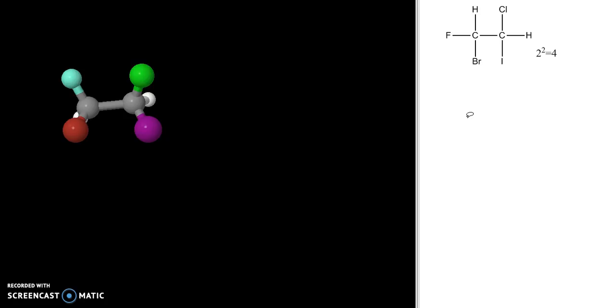We can start by drawing any one of the four. I like to start with this one because I've put my smallest groups away from me, which makes it easier in the easiest way to draw it so that I can assign the stereochemistry at my two stereocenters. And without going into a discussion of which group has priority over which, we can look at this molecule and assign the stereocenters as R and S. So that's my first stereoisomer.